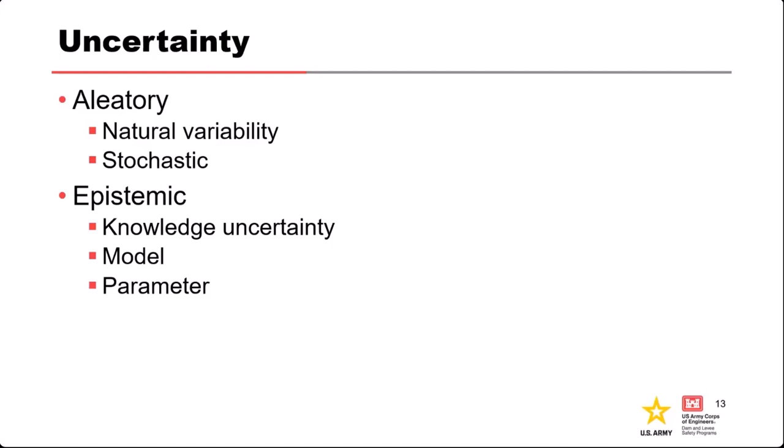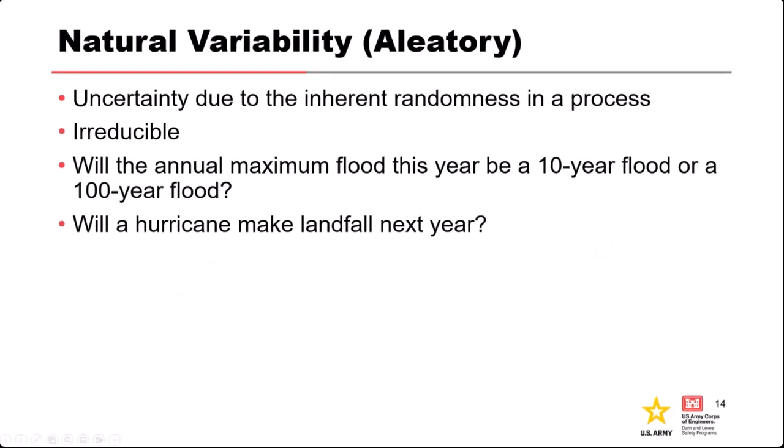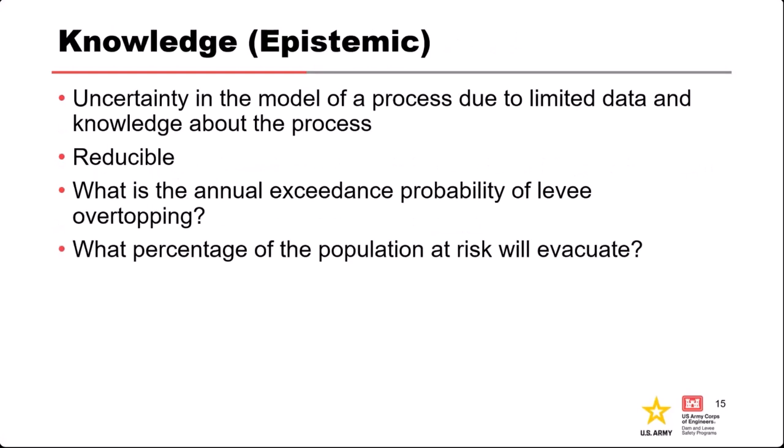That's the key distinction, and the reason we differentiate them in risk analysis is because natural variability must be treated as random, while for knowledge uncertainty we have choices: we can invest in more study to reduce it, or proceed with the decision given the uncertainty we have.